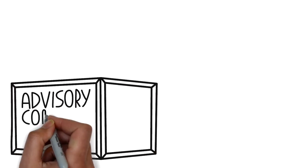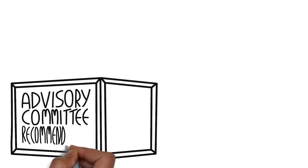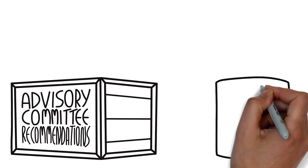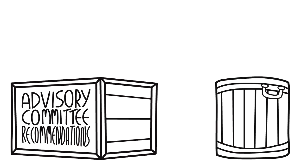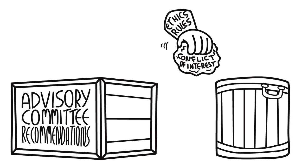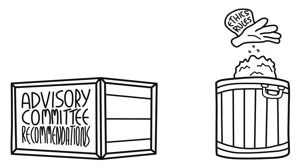The ethics rules are a necessary safeguard to ensure that the important work and recommendations made by federal advisory committees are free from impermissible conflicts of interest and to maintain the trust of the American people in the important work of the committee.